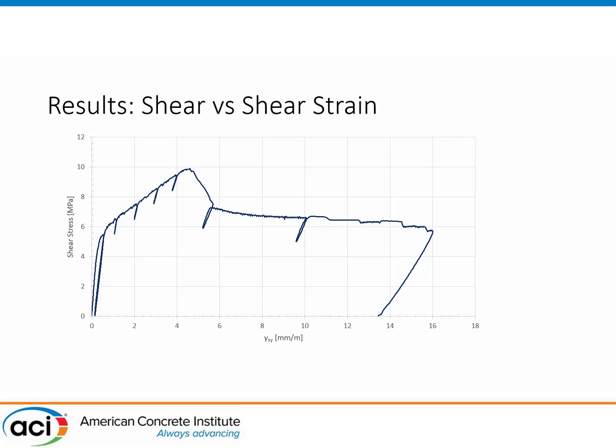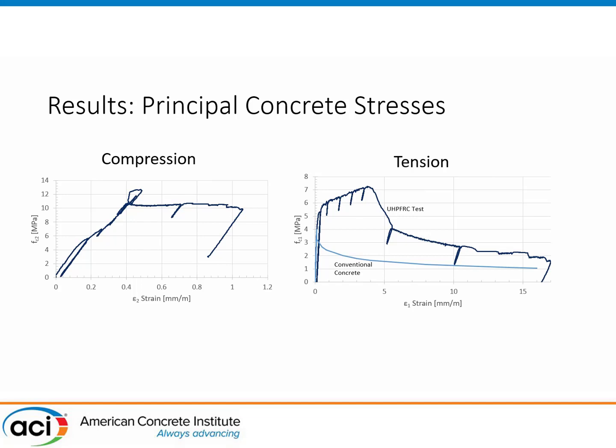Once we have these results, we can examine the principal directions — principal compression direction and principal tension direction. The strain showed it wasn't perfectly horizontal and vertical; there was some twisting of a few degrees, but that's not important. We can then calculate the principal compression behavior and principal tension behavior. The principal compression behavior shows compressive stress versus compressive strain. Initial stiffness was what we expected from linear elastic behavior. After the cracks formed there was a significant decrease in compression stiffness, such that by peak load the secant stiffness was only about two-thirds of the uncracked response. That indicates that compression stresses between the cracks were still feeling the effects of the cracks.